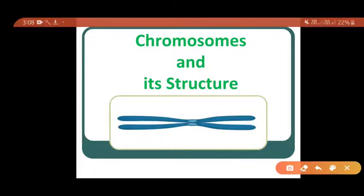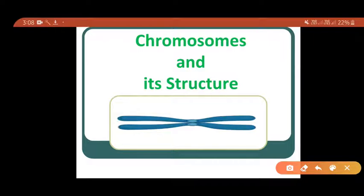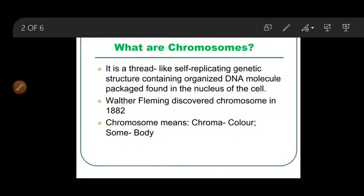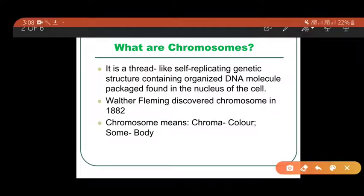Today, the topic we will be discussing is chromosome and its structure. What does chromosome mean and where do we find it? The chromosome is the thread-like structure of DNA and protein containing the genetic information, and it is found in the nucleus of the cell.